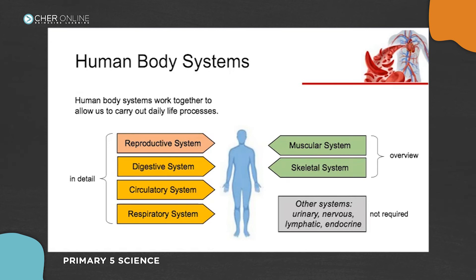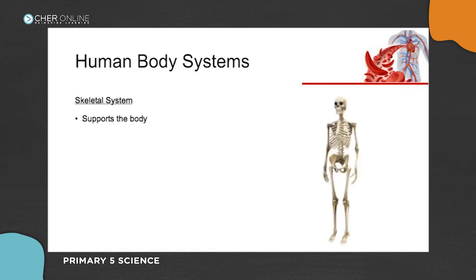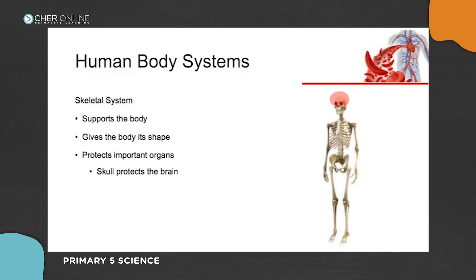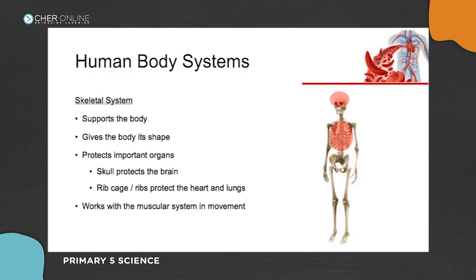The skeletal system — it looks a bit creepy but it's not Halloween. The skeletal system gives your body its shape, supports many of your organs and tissues, and allows you to stand upright. It protects important organs: the skull protects your brain, and the ribs protect the heart and lungs. The skeletal system also works together with the muscular system to bring about movement, since muscles are attached to bones.